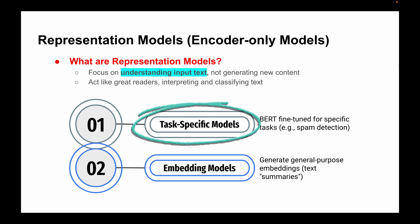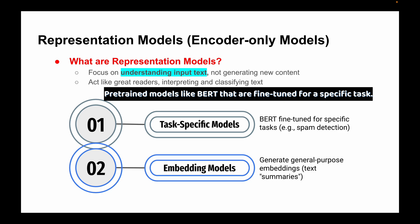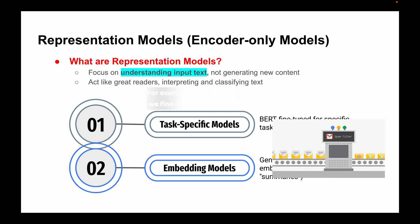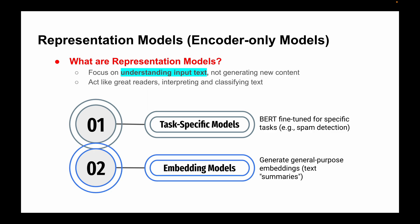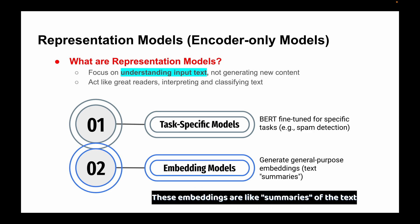The first type is task-specific models. These are pre-trained models like BERT that are fine-tuned for a specific task. For example, if you're working on spam detection, you fine-tune BERT specifically to recognize spam and non-spam messages. The second type uses embedding models. These models generate general-purpose embeddings, which are like summaries of the text that can be used for a variety of tasks like sentiment analysis or topic classification.